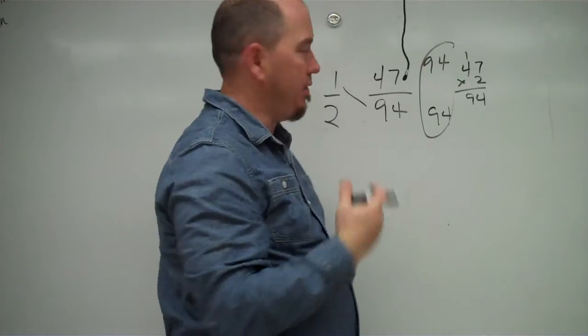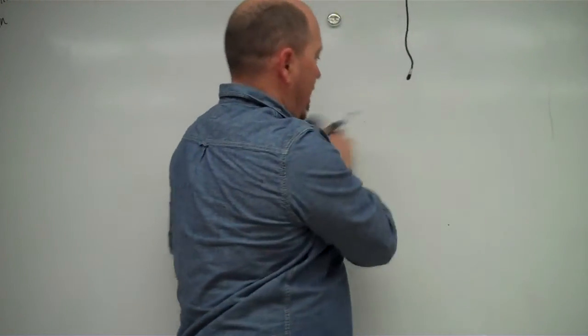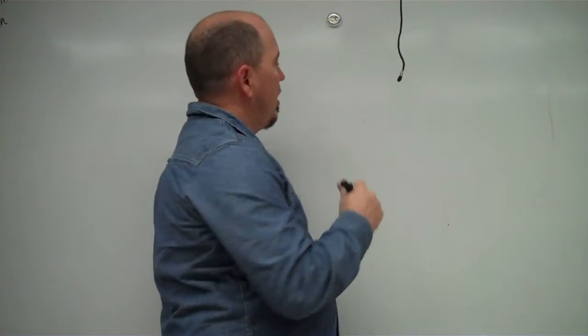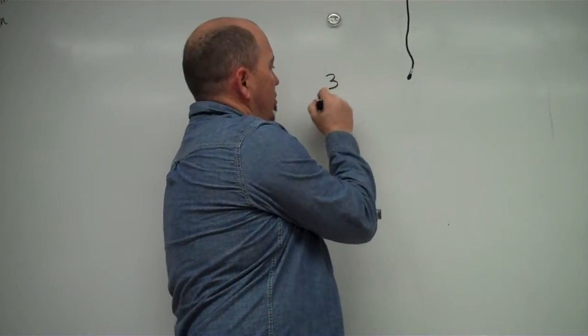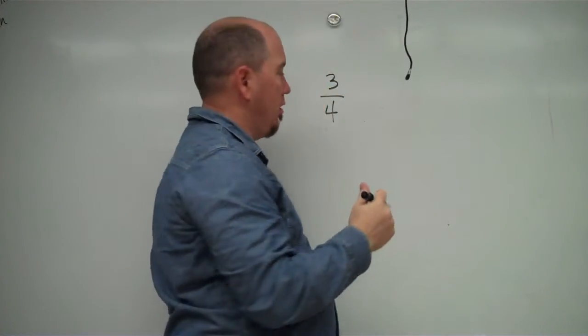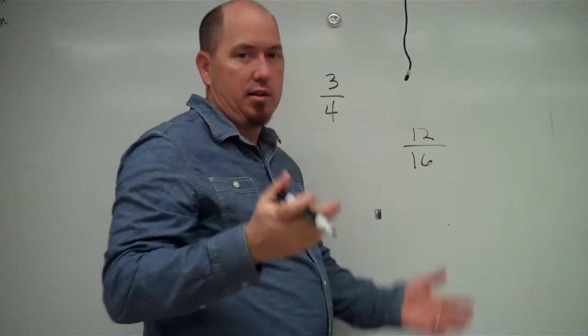So another way to write one half is 47, 94. Who'd have thought? Now, how do I know which fraction is larger or smaller? I'm going to take like 3 fourths and I'm going to compare that to 12 sixteenths. Something like that.